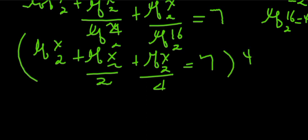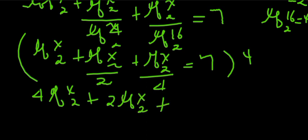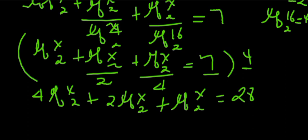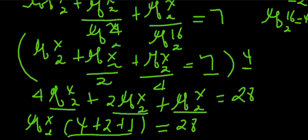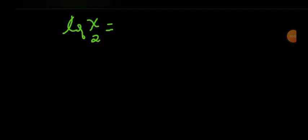Multiplying through by 4: 4 log of x in base 2, plus 2 log of x in base 2, plus log of x in base 2, equals 28. Factoring: log of x in base 2 times (4 plus 2 plus 1) equals 28. That gives 7 times log of x in base 2 equals 28, so log of x in base 2 equals 4.